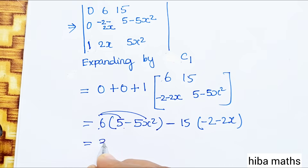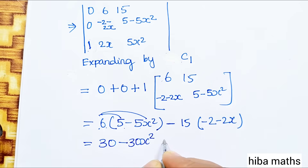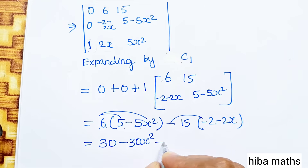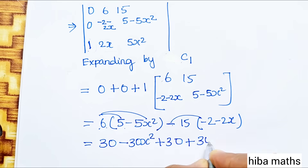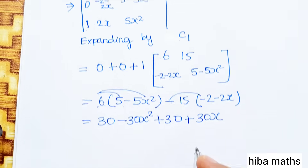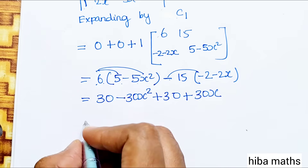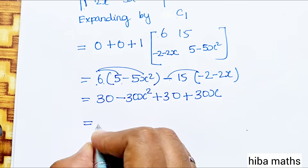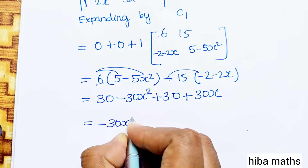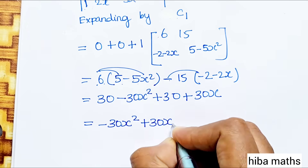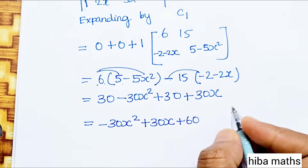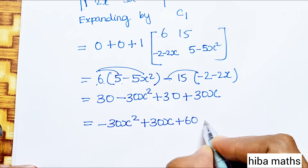Computing: 6×(5−5x²) − 15×(−2−2x) = 30 − 30x² + 30 + 30x = −30x² + 30x + 60. Set equal to 0.